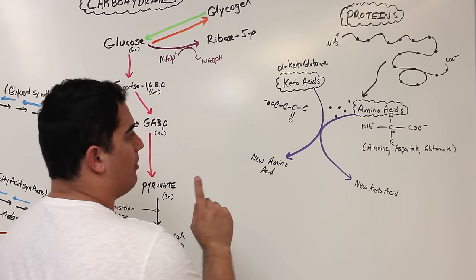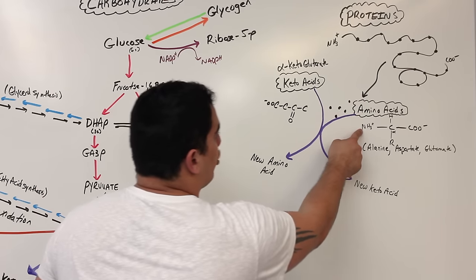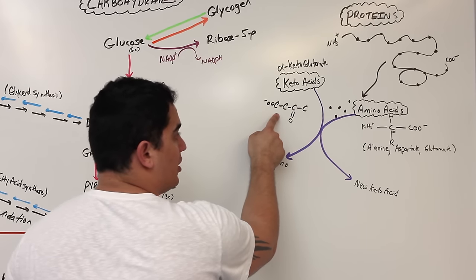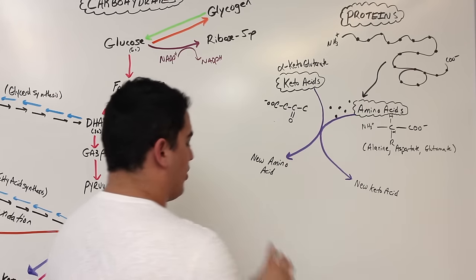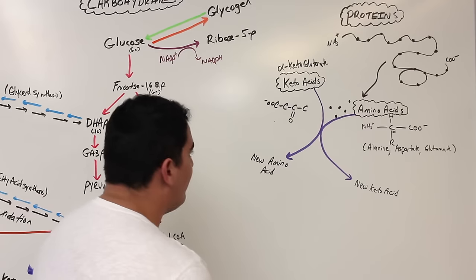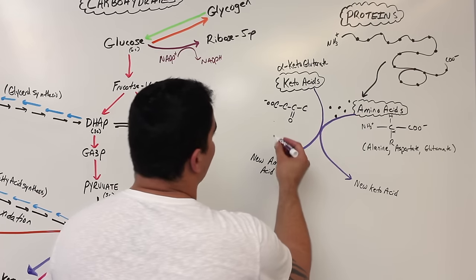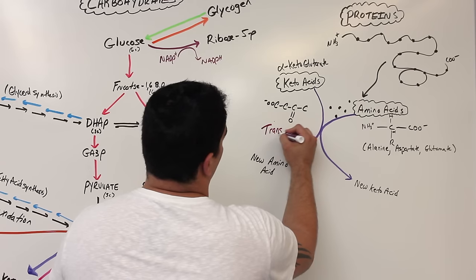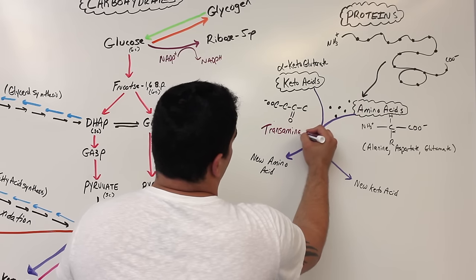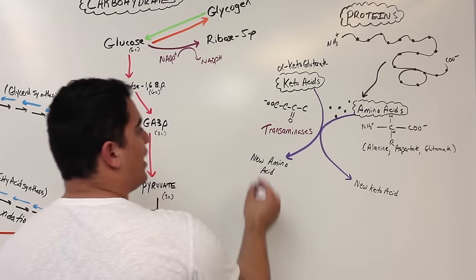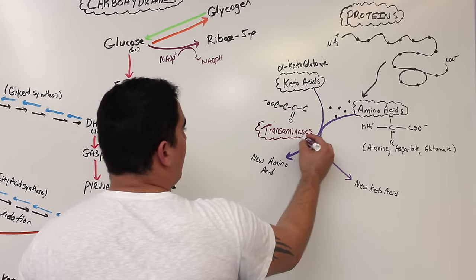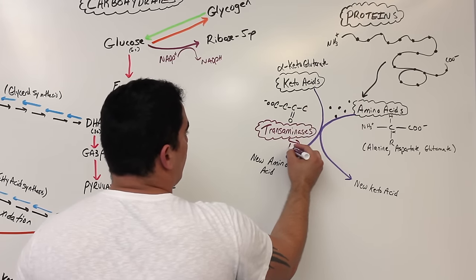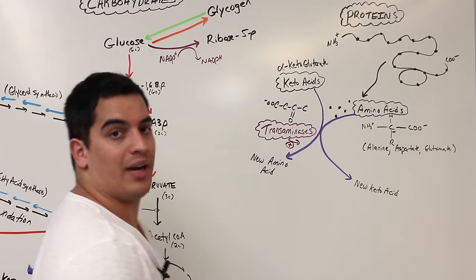Why do we call it transamination? Because the amine group is being transferred onto the keto acid, and the oxygen is being transferred to the amino acid. It is also very dependent upon enzymes called transaminases. These transaminase enzymes are very important because they help catalyze this reaction.